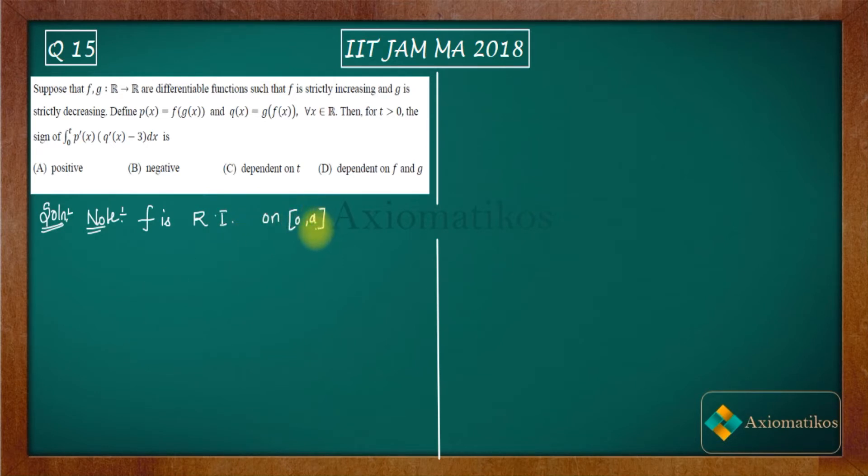So f is Riemann integrable on [0, a] and f is greater than 0. On this interval, if it is greater than 0, then what happens? Integration of f will also be greater than 0.